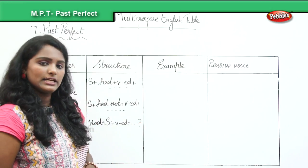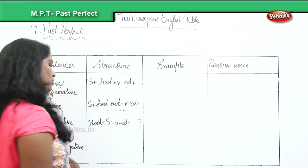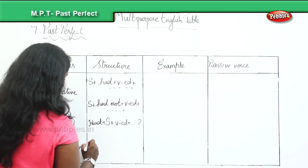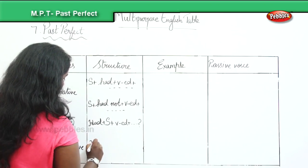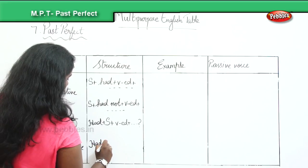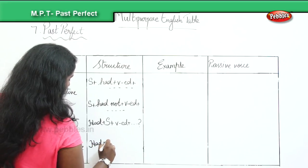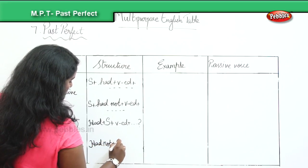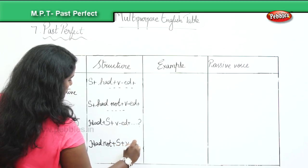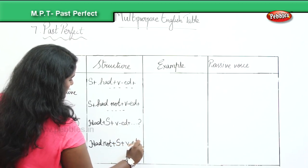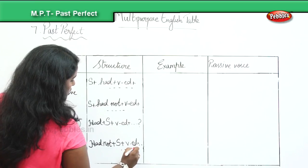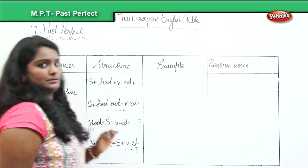When it comes to the negative interrogative form, you just will have to add a not to it. So had not, plus subject, plus the ed form of the verb, and then the remaining part of the sentence with a question mark.